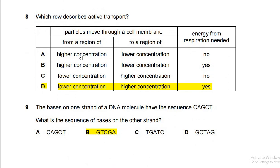Question eight: which row describes active transport? Active transport requires energy from respiration — yes. Particles move through a cell membrane from a region of lower concentration to a region of higher concentration — yes, because active transport works against the concentration gradient. Remember: osmosis and diffusion move from higher to lower concentration, but active transport moves from lower to higher. Active transport is the only process that requires energy; osmosis and diffusion do not.